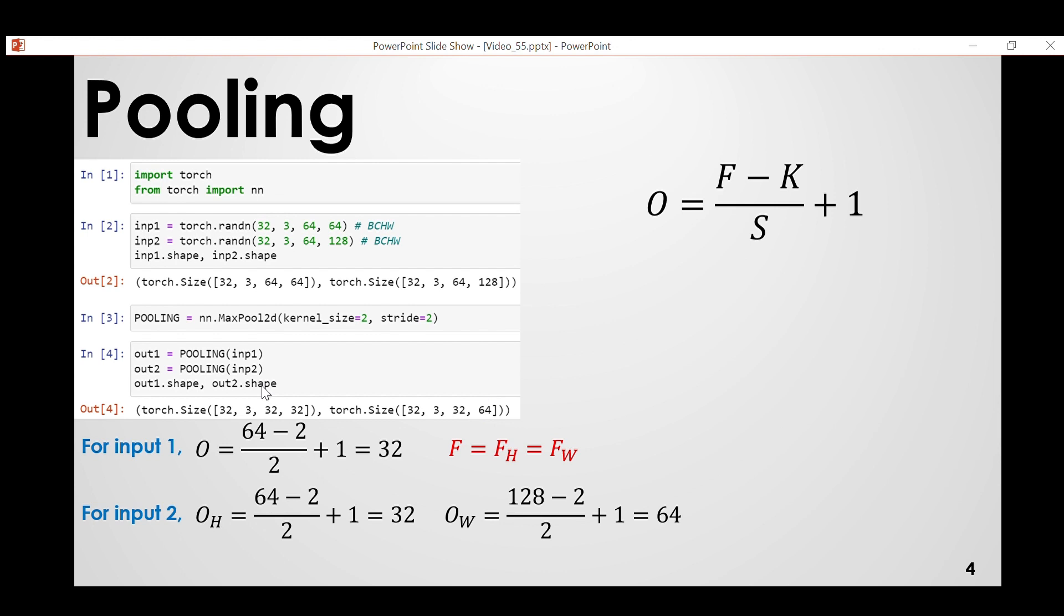This is the different height, different width. And pooling does not deal with the channels. Output tensors will have the same number of channels as input tensors. We can see here this is three, same as this one. So this is how we can calculate the output shape of these three layers: convolutional, deconvolutional, and pooling layers in CNN.